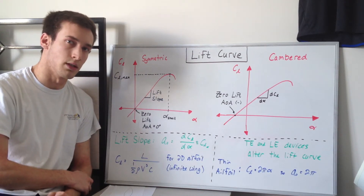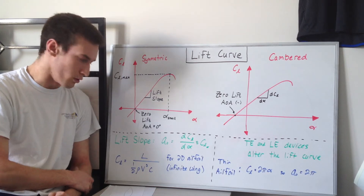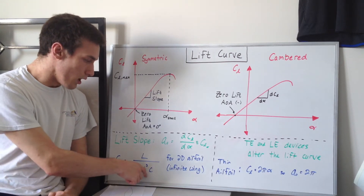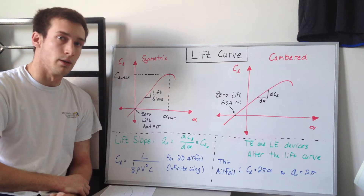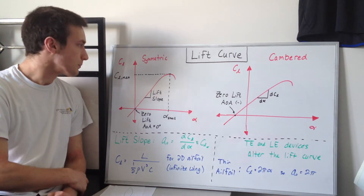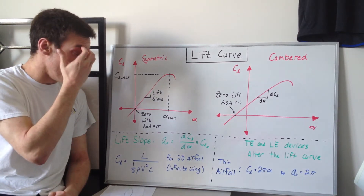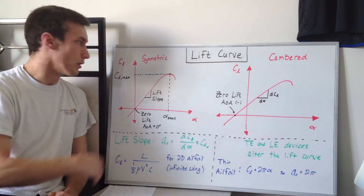You can also think of it as an infinite wing. For a 3D airfoil you'd have a capital L, and this would no longer be chord length — it would be some reference area, like the wing area. But we're dealing with 2D airfoils right now because it's a good starting point.